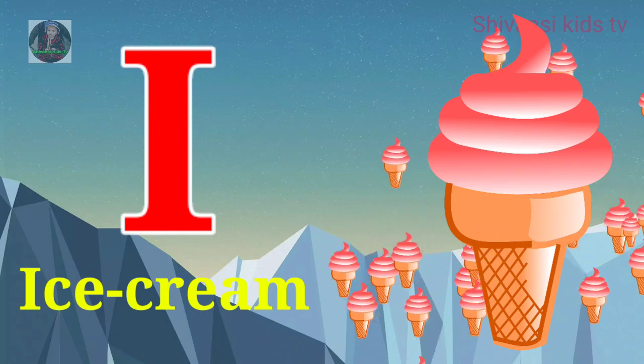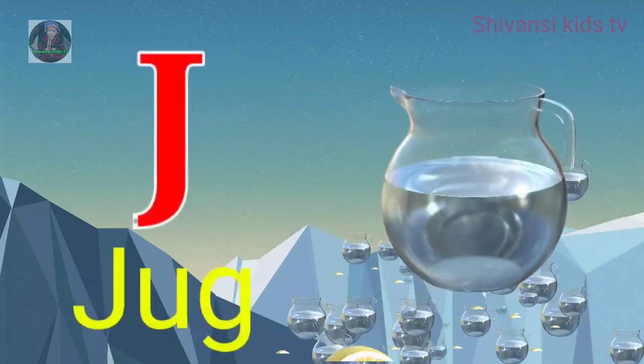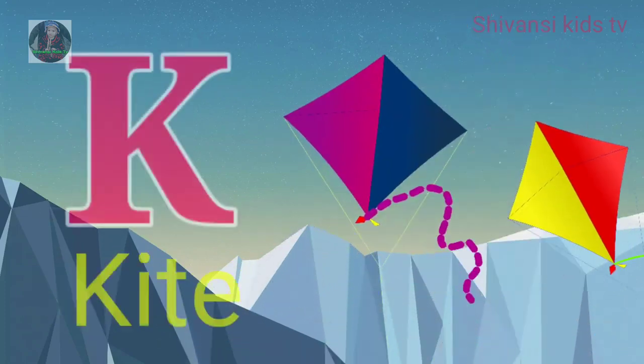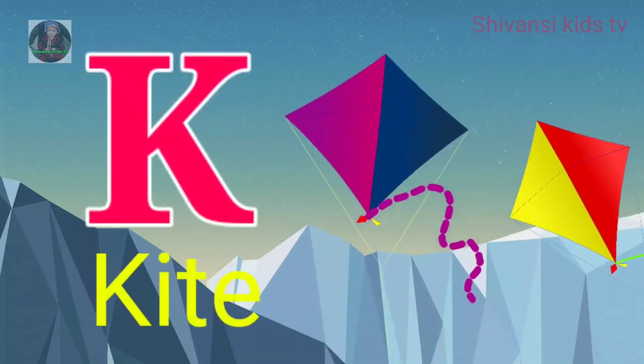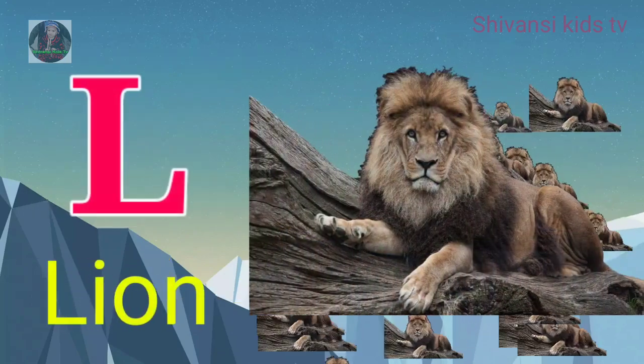I for ice cream, J for jug, K for kite, L for lion.